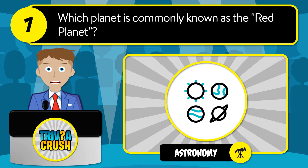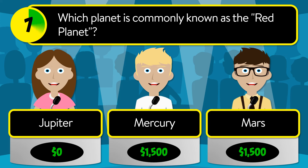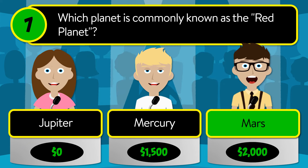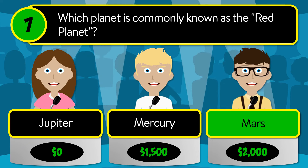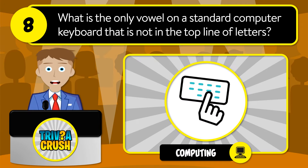Question number seven: which planet is commonly known as the red planet? Is it Jupiter, Mercury, or Mars? The correct answer is Mars.